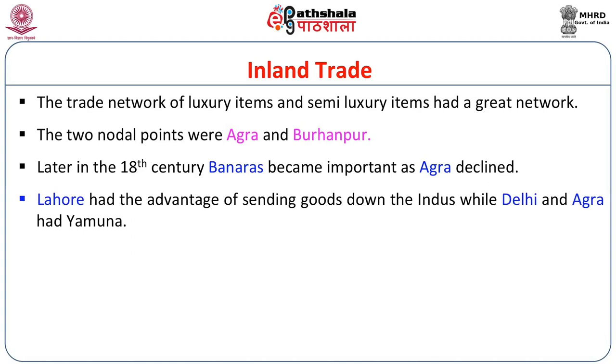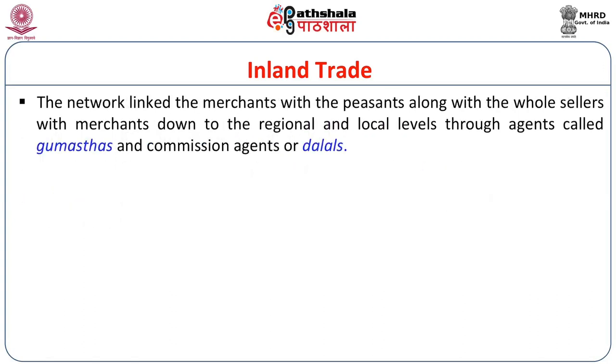Lahore had the advantage of sending goods down to the Indus, while Delhi and Agra had the Yamuna River to communicate. The network linked merchants with peasants, along with wholesalers with merchants, down to regional and local levels through agents called Gumastas or commission agents, or Dalals. These were considered together as bulk commission agents, and later became money lenders in the post-Mughal era.